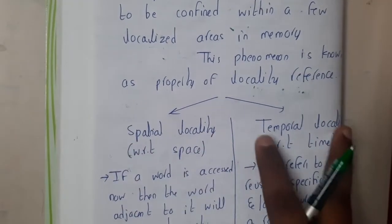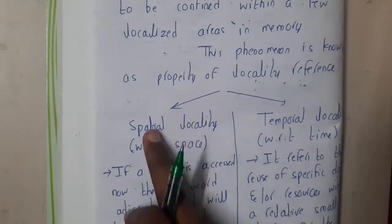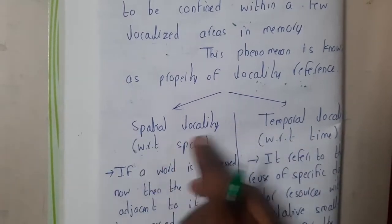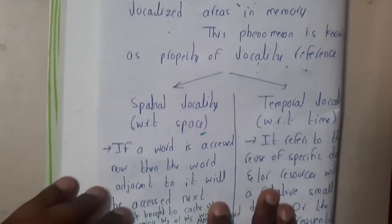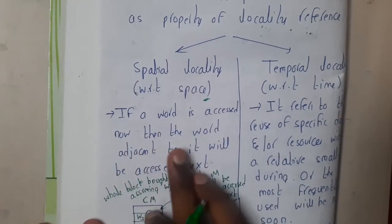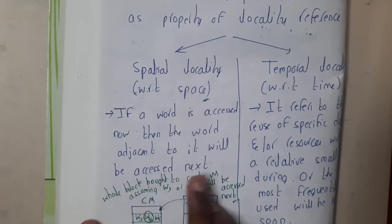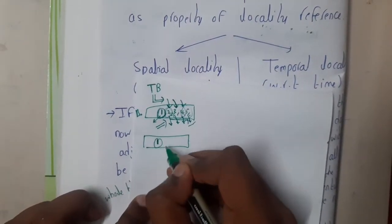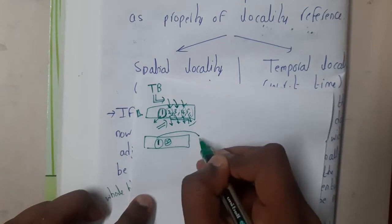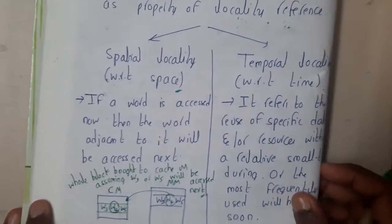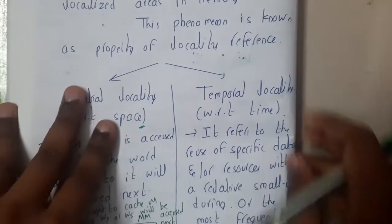Spatial locality relates to space; temporal locality relates to time. Spatial locality says: if a word is accessed now, the word adjacent to it will be accessed next. Using the book example — if I read page one, there is a high probability I will read page two rather than jumping to page hundred. I am not saying 100%, but the maximum probability will be that.